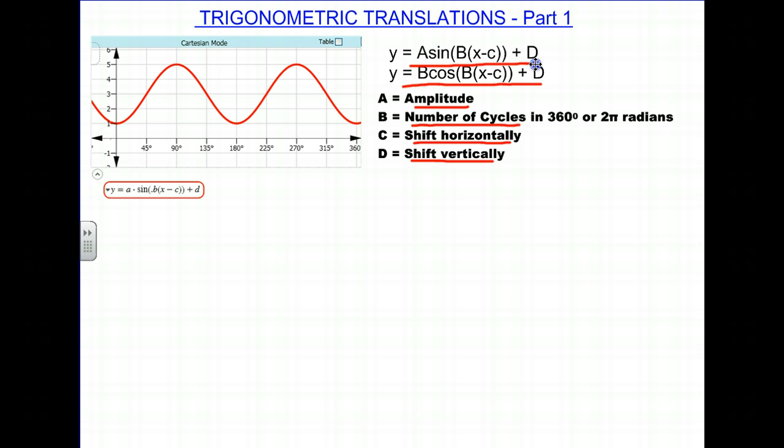In problems like this, the first thing you want to do is find the midline. And if you remember, the midline, the equation for the midline or the formula, is equal to the max plus the min divided by 2. It's really the average. And the maximum point here, you'll notice, is at 5, the minimum point is 1.